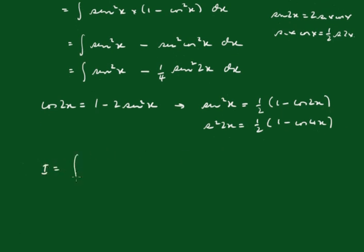1 half of 1 minus cos 2x minus, and this will be a quarter of that, it'll be one eighth of 1 minus cos 4x dx.